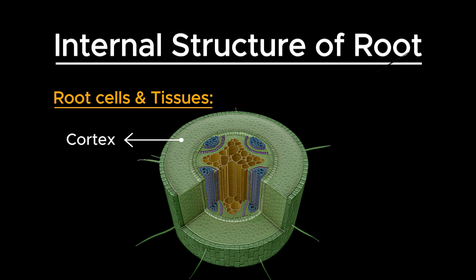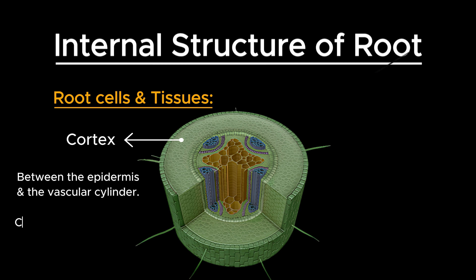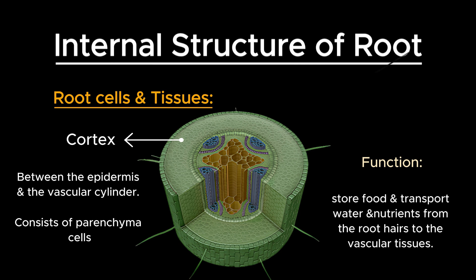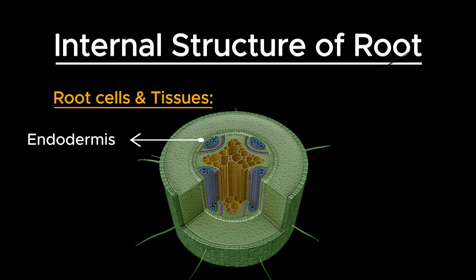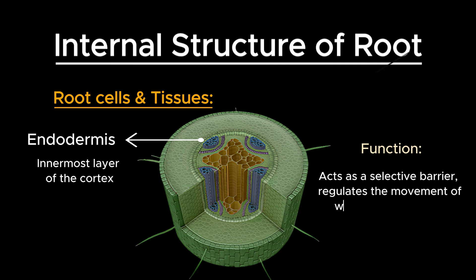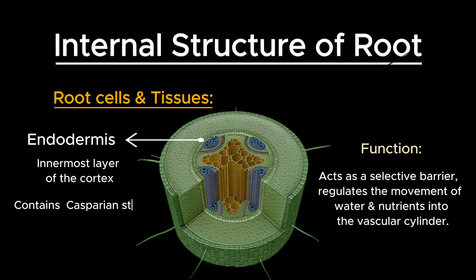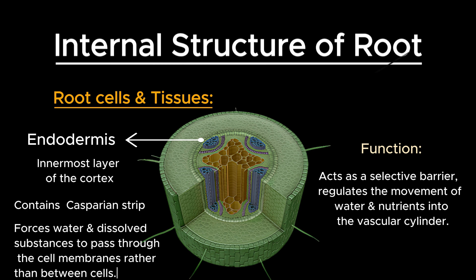Next to the epidermis is the cortex. It is located between the epidermis and the vascular cylinder. The cortex consists of parenchyma cells that store food and transport water and nutrients from the root hairs to the vascular tissues. The endodermis is the innermost layer of the cortex. It acts as a selective barrier that regulates the movement of water and nutrients into the vascular cylinder. It contains the Casparian strip, a band of cell wall material impregnated with suberin and lignin, which forces water and dissolved substances to pass through the cell membranes rather than between cells.